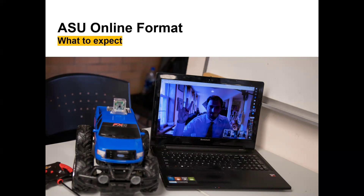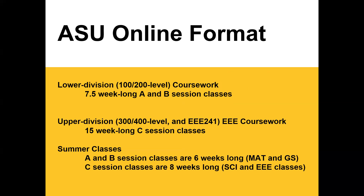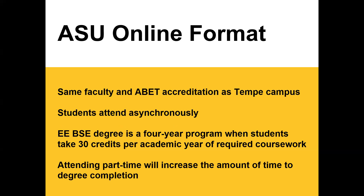Regarding the ASU online format: you may have heard the word 'accelerated' used often. That does not mean the major itself is accelerated — it means the lower division coursework is offered in accelerated, truncated sessions A and B, which are seven and a half weeks long. All 100 and 200 level coursework is offered in those sessions. All upper division 300 and 400 level coursework is offered in the traditional 15-week C session semester. Sessions A and C start at the same time in fall and spring. In summer, sessions A and B are six weeks long and session C is eight weeks long. The ASU online format has the same faculty and ABET accreditation as the Tempe campus, and students attend asynchronously with no requirement to be in the classroom at any specific time.